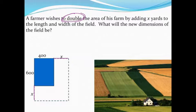Here's what we've got. Right now, it's important to note what the area of our field is now. So 400 times 600 gets us an area right now of 240,000 square yards.